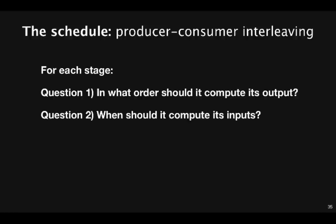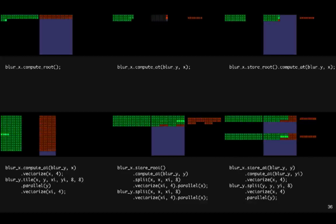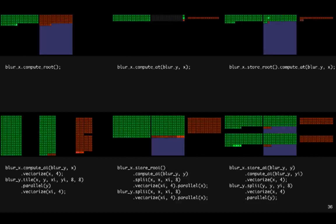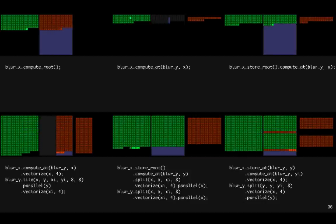So given an algorithm in this form, the schedule is then responsible for two things, answering the two questions we saw earlier. First, it has to specify for every stage in the pipeline in what order to compute the pixels produced by that stage. And second, for every producer-consumer relationship in the pipeline, it has to specify how the computation of the two is interleaved. The nice thing about Halide is that you can specify these two things in a few lines of code without touching the code that defines your algorithm. Here's the Halide code that gives the traversal orders we've seen so far. Each of these has its own trade-off between locality, parallelism, and redundant recompute.